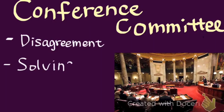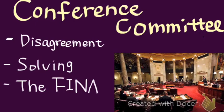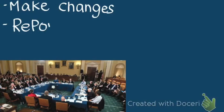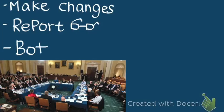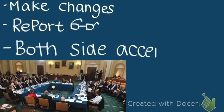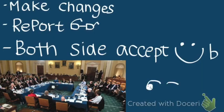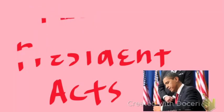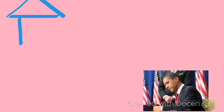Conference committees. What is the role of a conference committee? When the House and Senate don't agree with each other's bill, a conference committee is held to solve the conflict. The purpose of the conference committee is to create a bill that both sides agree with. There is a conference manager chosen to make changes to the bill. After the final version of the bill is done, the conference manager will report the bill to each house for them to decide whether they are going to accept it or not.